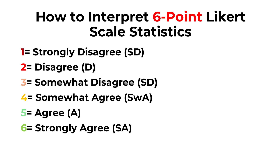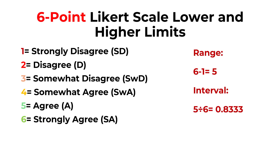Once you code them this way, you can proceed with calculating the range. We take the highest code, which is six, subtract one to get five, then divide five by six, giving us 0.83. This is the range or interval that we will use.